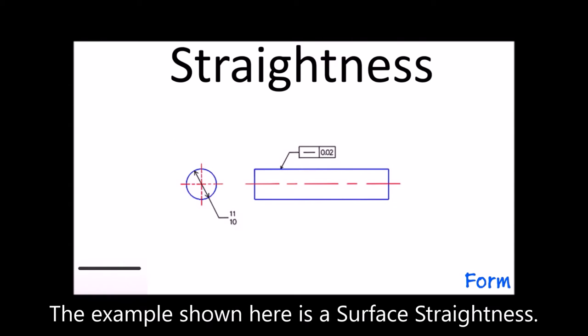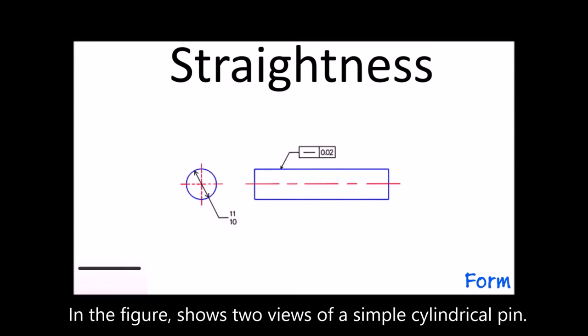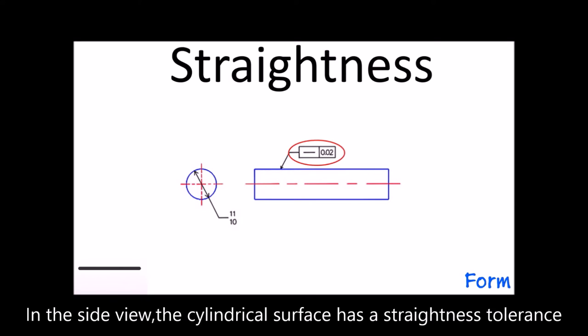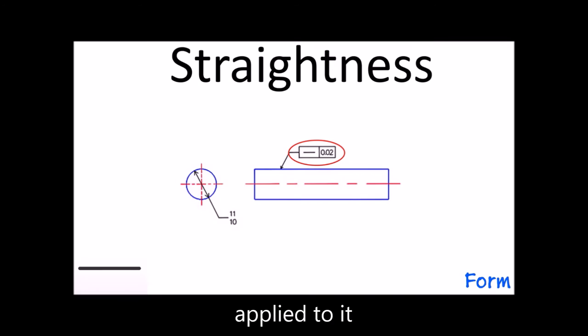The example shown here is a surface straightness. In the figure shows two views of a simple cylindrical pin. In the side view, the cylindrical surface has a straightness tolerance applied to it.